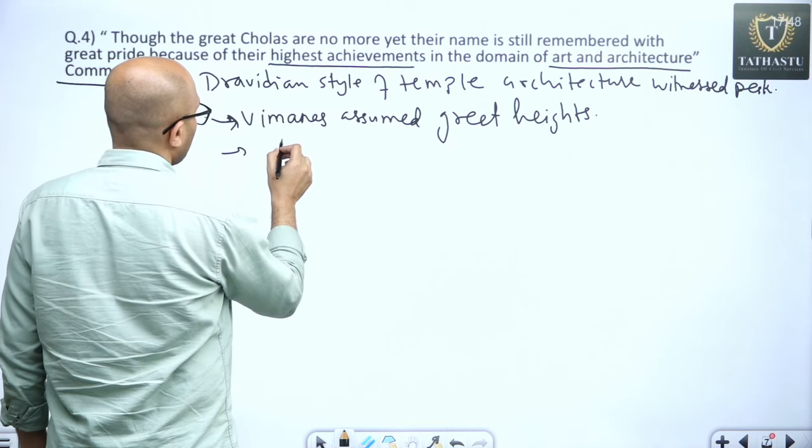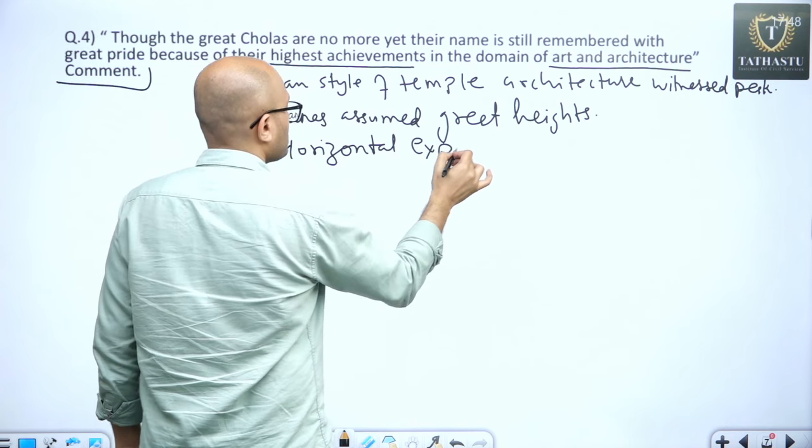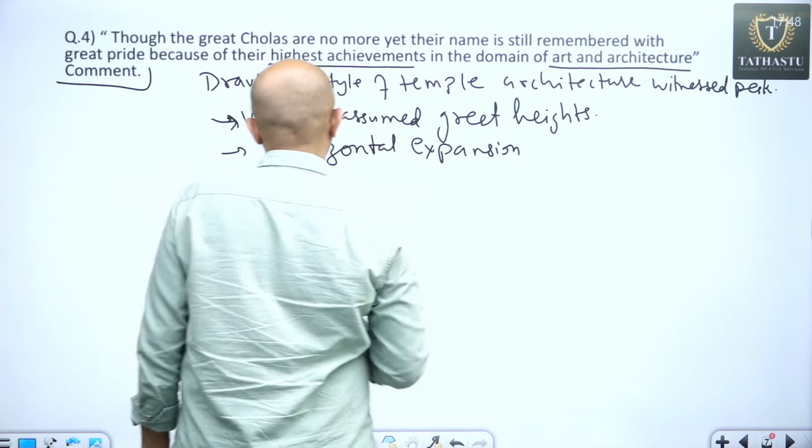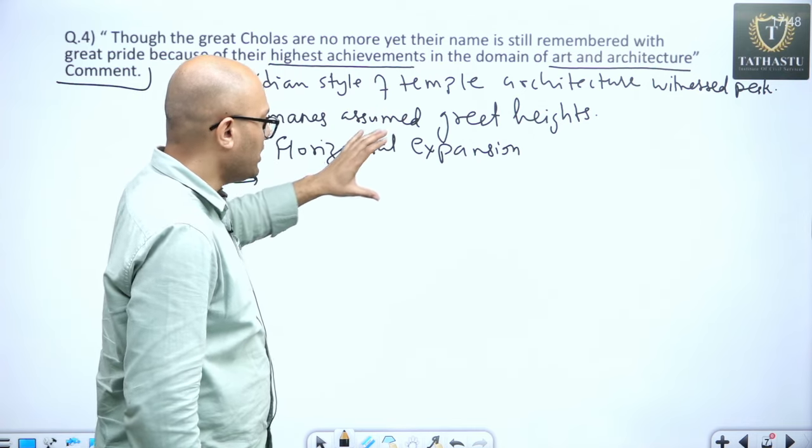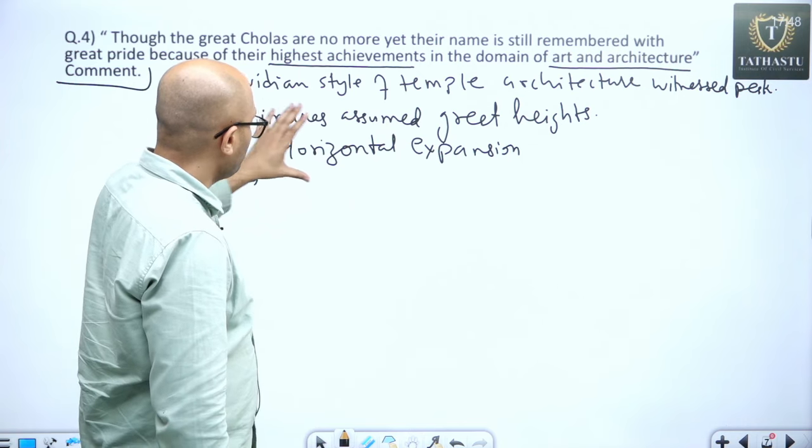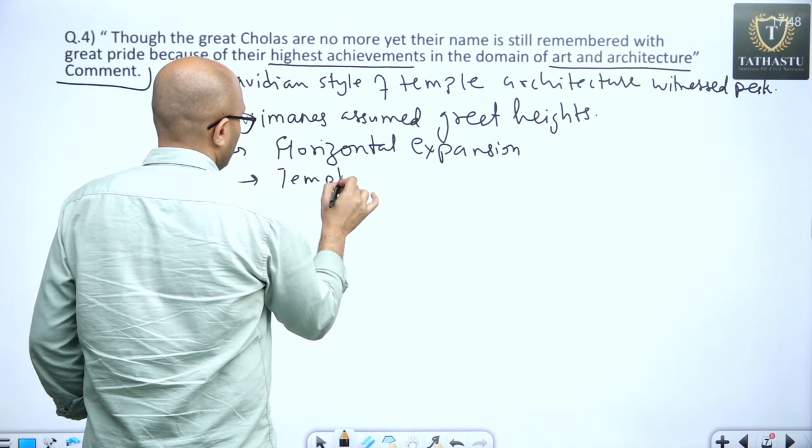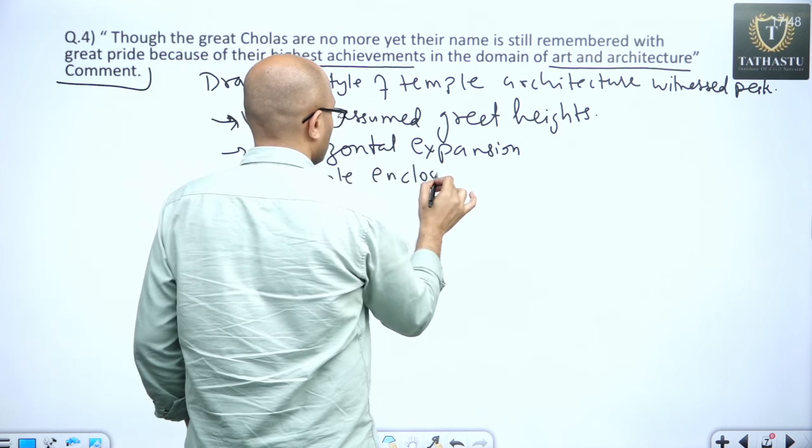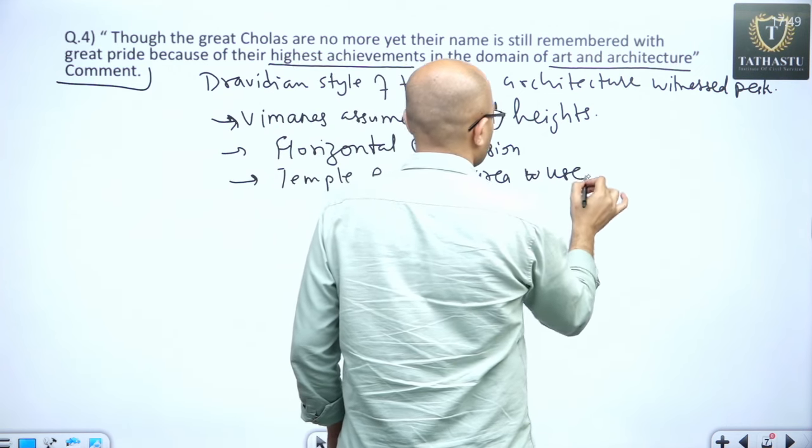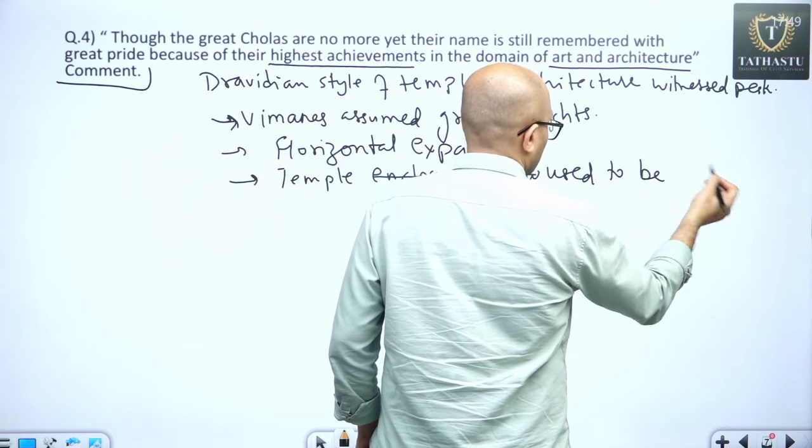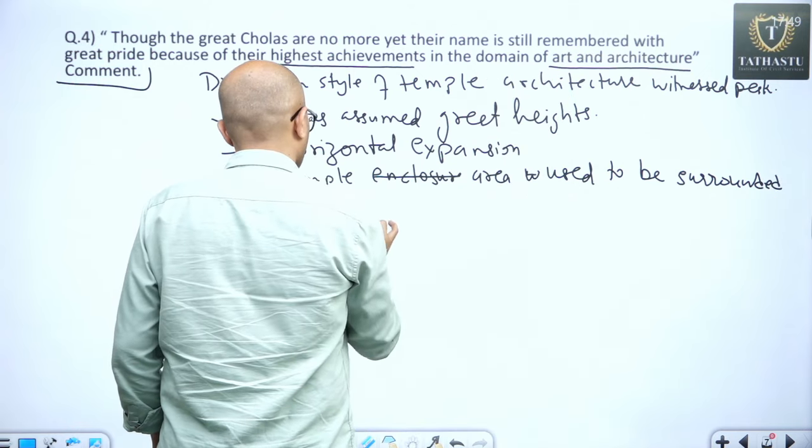Also temple witnessed horizontal expansion, horizontal expansion during the time of Cholas also. Now these horizontal expansion near the main temple, it led to a situation where a new feature was added where this temple complex used to be enclosed, temple enclosure, the temple area used to be enclosed, used to be surrounded by enclosure, surrounded by enclosures.